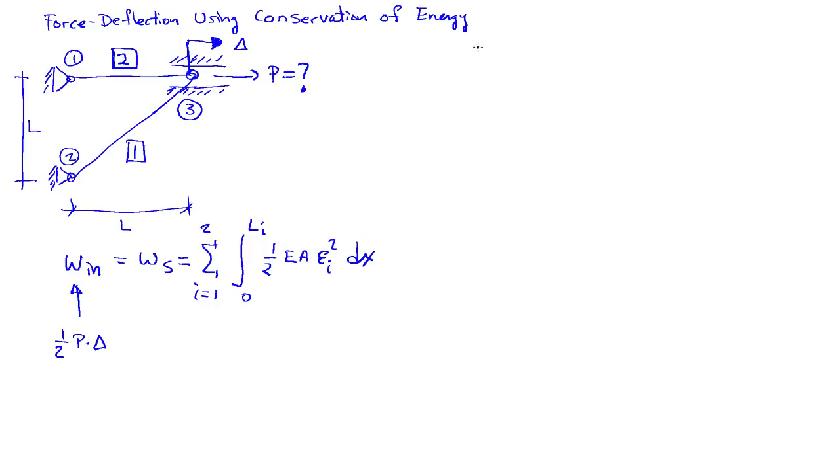What I do know is that the displacement at node 3 is equal to delta times the unit vector in the horizontal direction, which I'll call e_x. I need to figure out what the change in length of each bar is. Delta L1 is going to be the dot product between u3 and the unit vector that goes from node 2 to node 3.